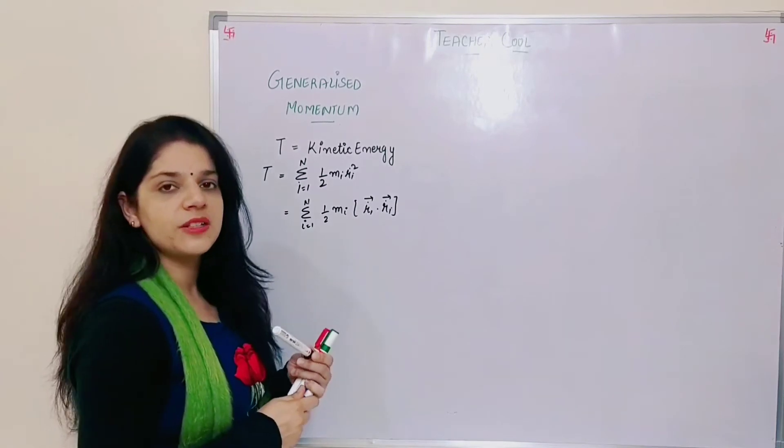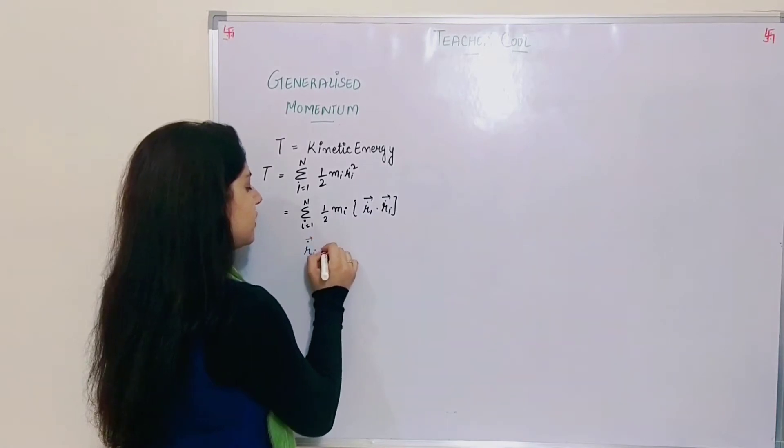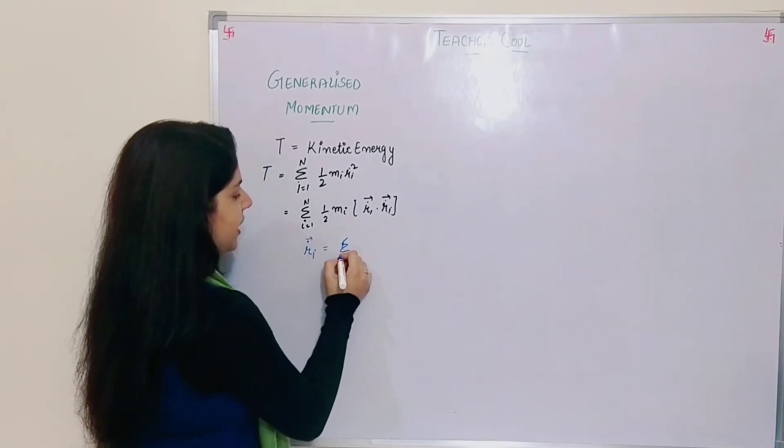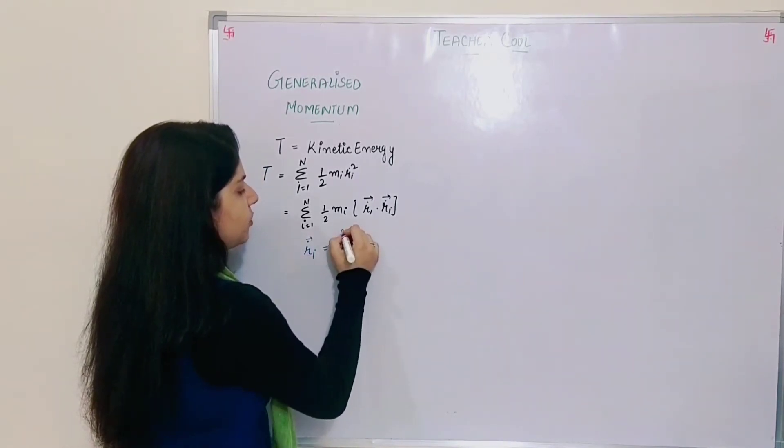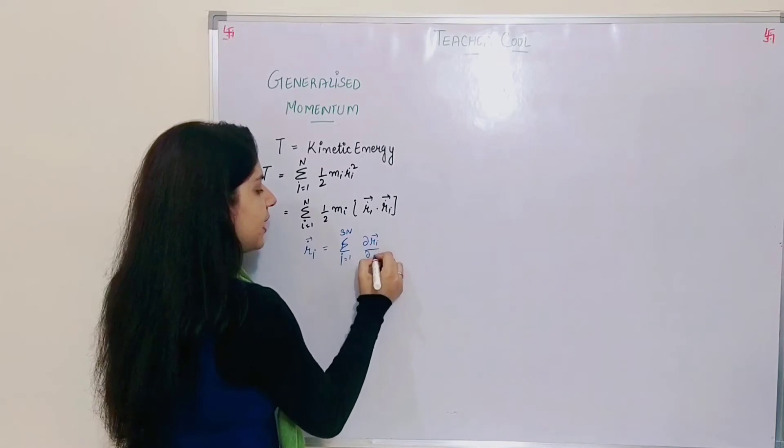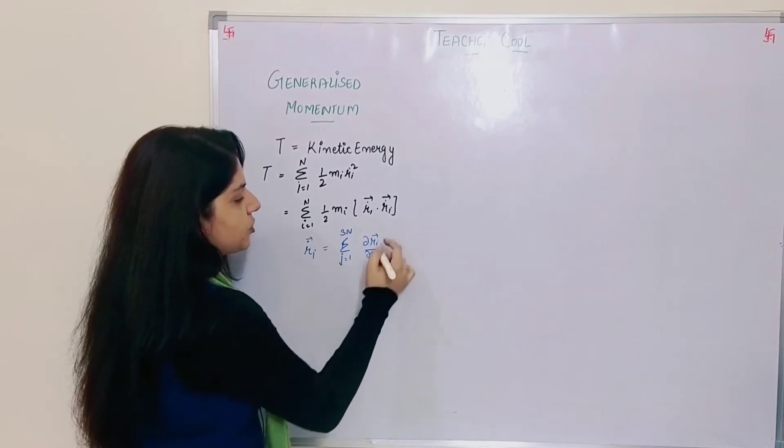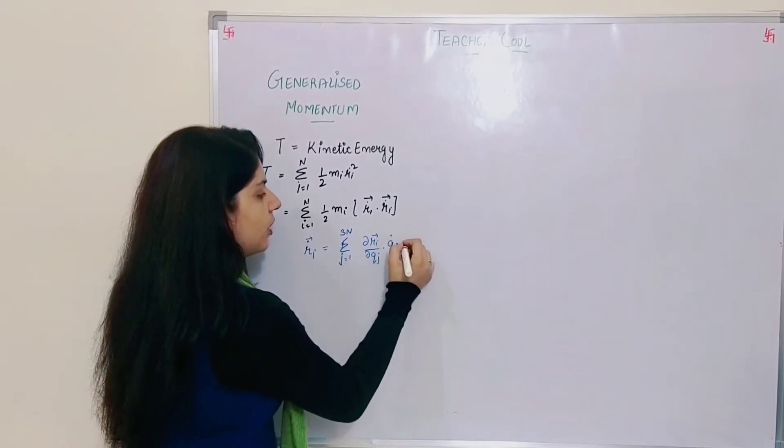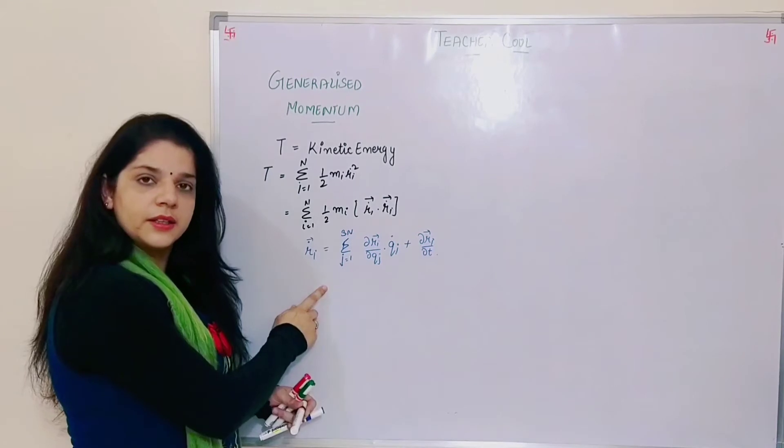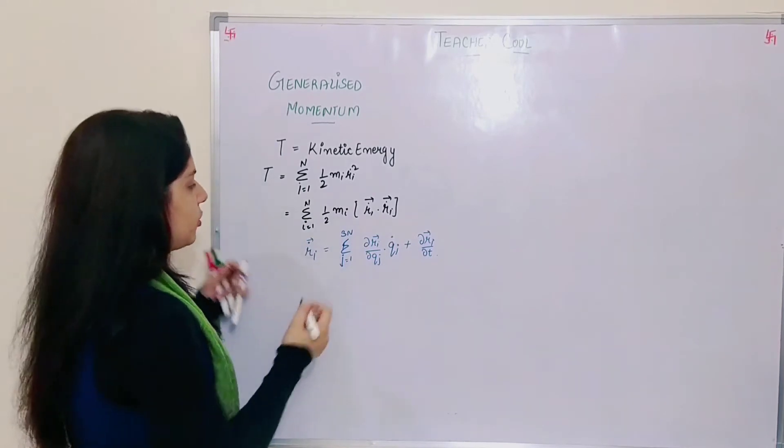In the previous lecture, we had the generalized velocity expression, which was r_i dot vector equals summation j equals 1 to 3n, del r_i by del q_j into q_j dot plus del r_i vector by del t. What we will do is substitute this value into the above equation. Let's do it.